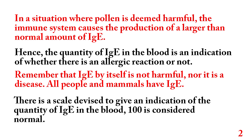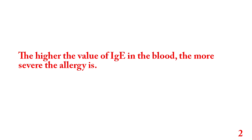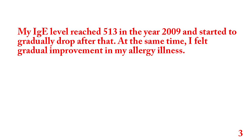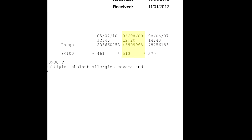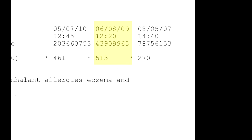100 is considered normal. The higher the value of IgE in the blood, the more severe the allergy is. My IgE level reached 513 in the year 2009 and started to gradually drop after that. At the same time, I felt gradual improvement in my allergy illness. This is my maximum reached IgE level of 513 in 2009.